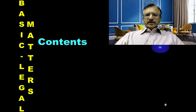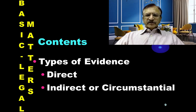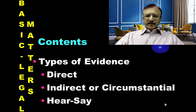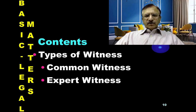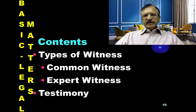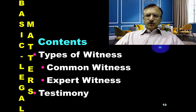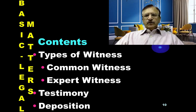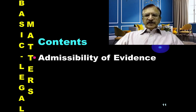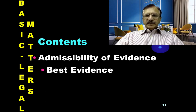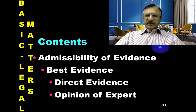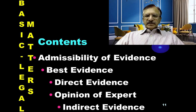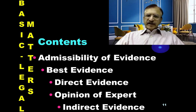Evidence can be oral or written, or it can be direct evidence, indirect or circumstantial evidence, and hearsay evidence. The type of witness can be a common witness or an expert witness. The doctor acts as both — as a common witness when presenting facts, and as an expert witness when drawing conclusions. We will also cover admissibility of evidence: the best evidence is direct evidence, and the opinion of the expert is also admissible, as is indirect evidence presented in the form of a book or conclusion.